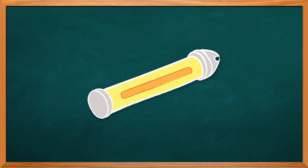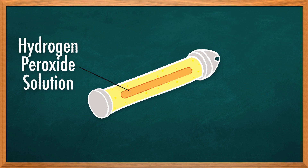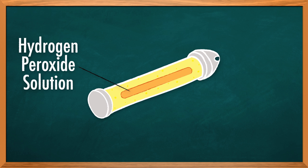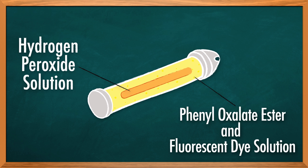If you look inside a glow stick, you'll see that there's a small glass vial in the tube. This vial typically contains a hydrogen peroxide solution called the activator. It's floating in a solution containing a compound called phenyl oxalate ester and a fluorescent dye.